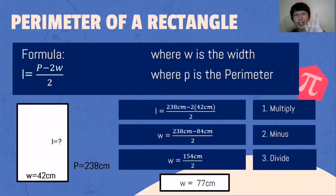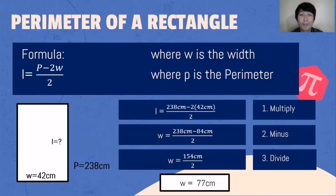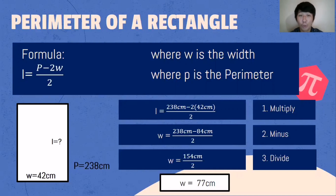Let's review our formulas. For the perimeter of a triangle: Side A + Side B + Side C. For the perimeter of a square: 4 × side. For the perimeter of a rectangle: 2 × length + 2 × width. And that ends our discussion for today.